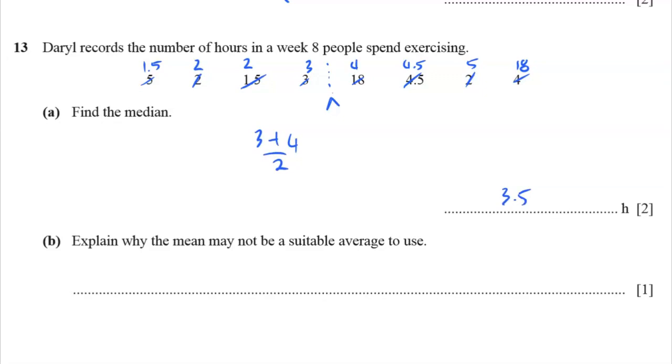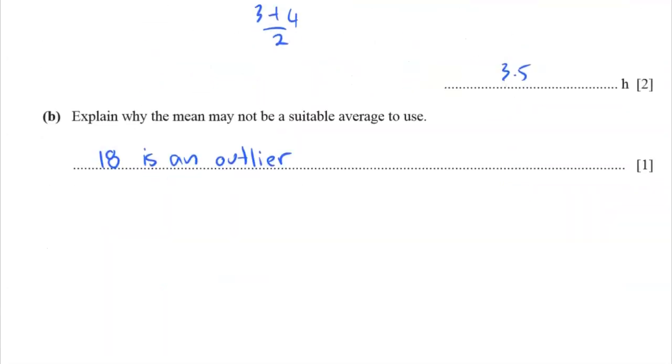Explain why the mean may not be a suitable average to use. When you have an outlier, that's an outlier there, like 18, which is very different from everything else. All the other numbers are quite small, between 1 and 5. And then you have 18 sitting out there by itself. So how do we say that? Let's just say 18 is an outlier, so it influences the mean. But I think that's enough of a description.